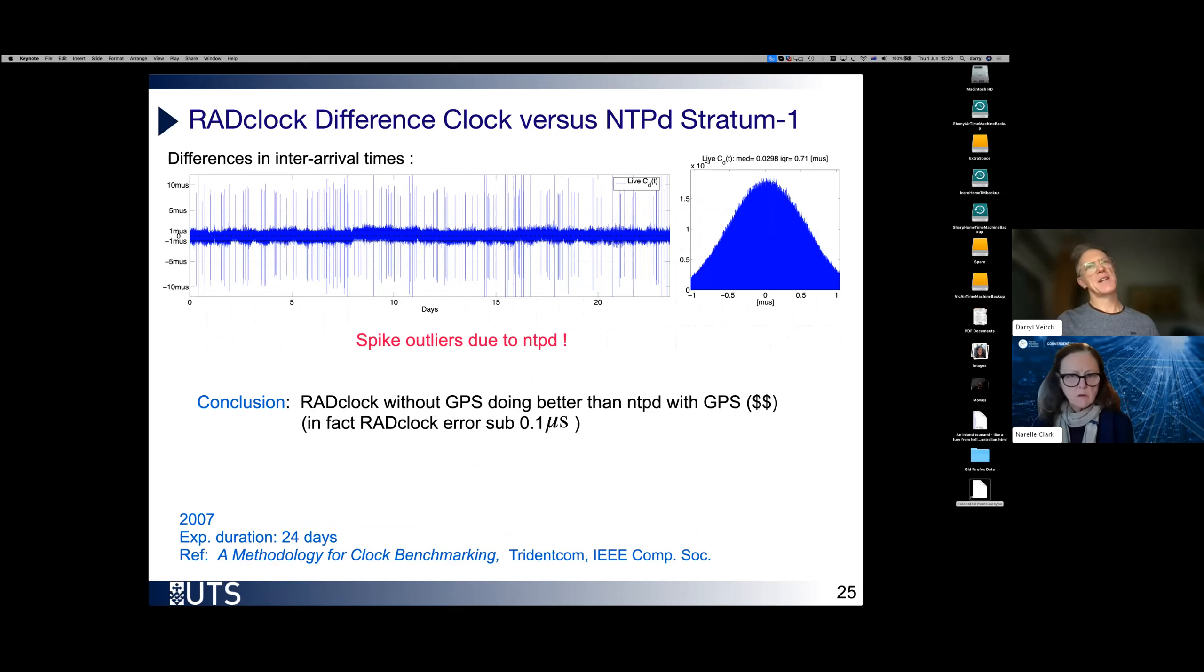So that was the absolute clock. Now I want to talk, give you, try to give you a result compared of the difference clock. Now, this is actually really difficult to show because the difference clock is so accurate. It's really difficult to have a methodology which will actually demonstrate how accurate it is. So this plot shows you one aspect.